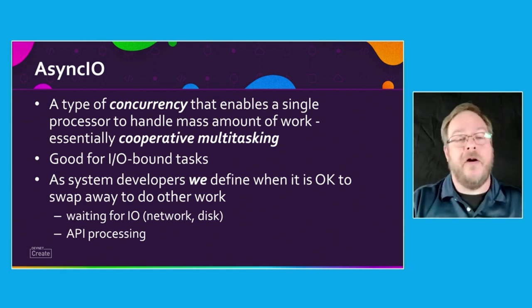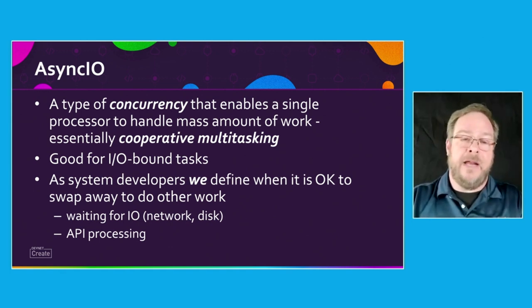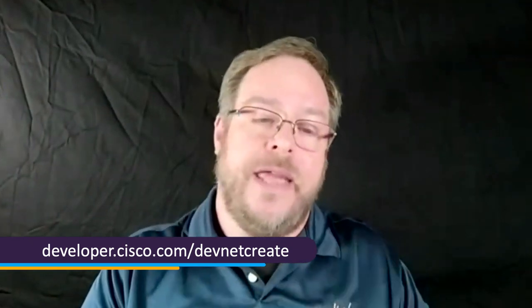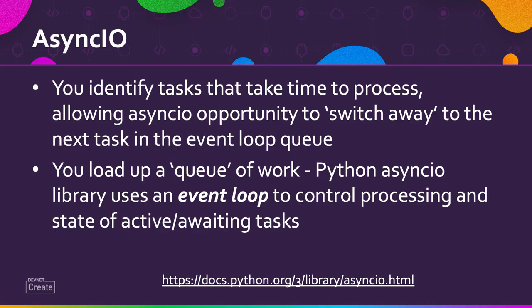With cooperative multitasking, that mechanic can say: I'm working on this car, I need another part I don't have, so I'll put that car in the parking lot, bring another car in and work on it. When it needs its paint dried, pull it out, put it back, pull another car in. As a system developer, we get to define when it's okay to swap out for other waiting tasks. We know that IO-bound tasks are great to swap out because we're waiting for network, disk, or some other API processing to happen. AsyncIO is able to switch away to the next task in the event loop — this queue or event loop monitors and controls the processing and maintains the state of awaiting tasks.